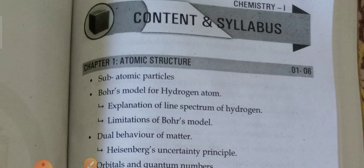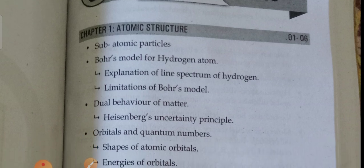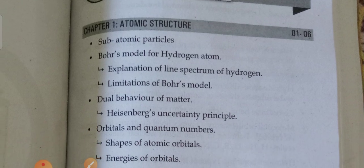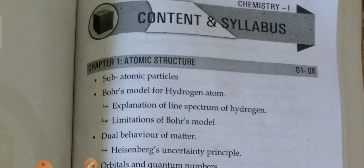So this is the syllabus of the chemistry. We will see it one by one. At last I will discuss about how many chapters are there. First chapter is atomic structure. This is the syllabus of the chemistry for the vocational students who are going to write the bridge course examination for the first year students. It may be useful for the AP and Telangana students also.